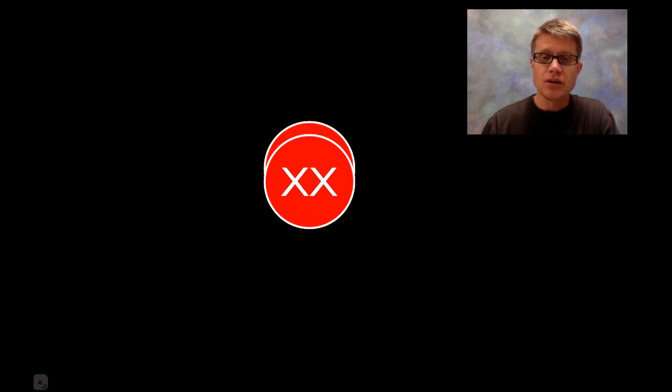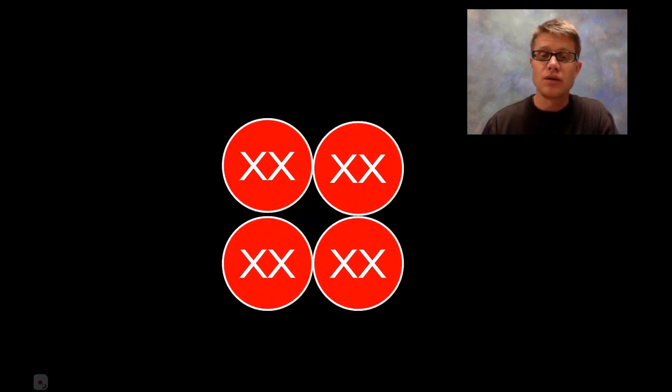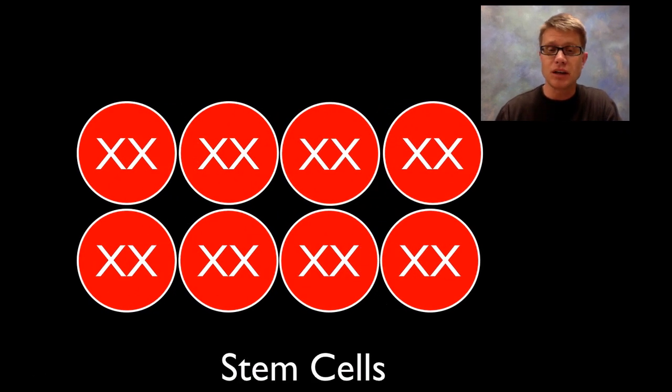And so let me kind of talk you through how this works. Well basically when you're born, well before you're born, when you're a zygote, that zygote, if you're a female, will have two X chromosomes. And those X chromosomes will be copied when the cell goes through mitosis. And so we go from having one cell to two, and then to four, and then to eight. And I could keep doing this. But basically when you get a big ball of cells like this, these are called stem cells. They're cells that can become any other cell.